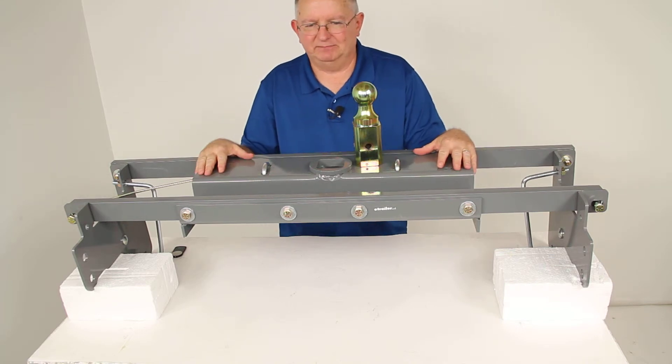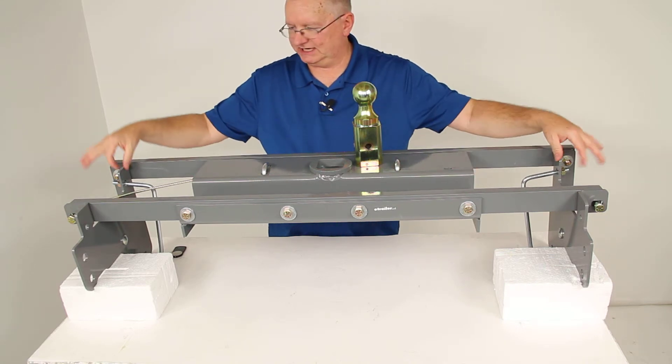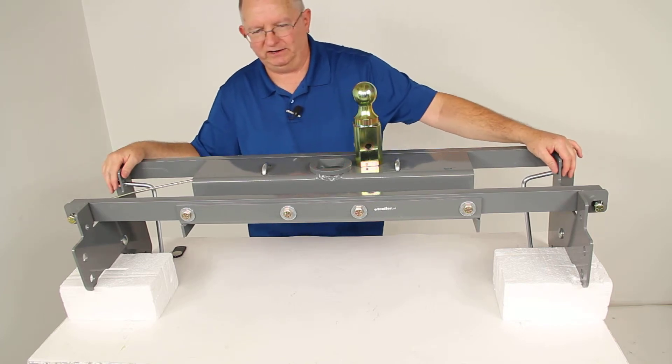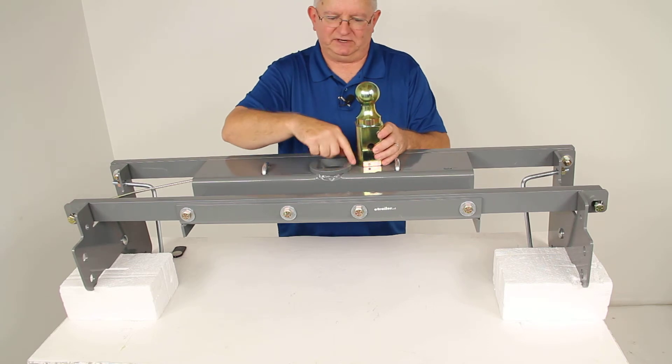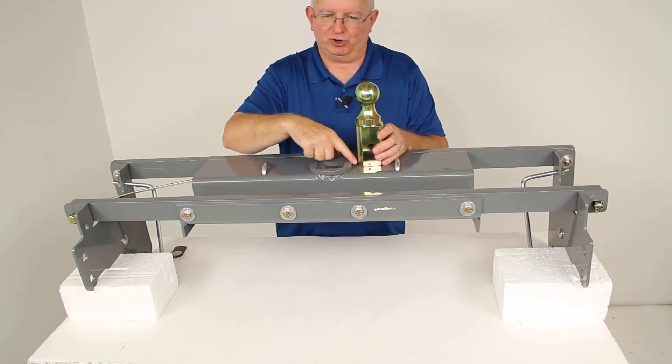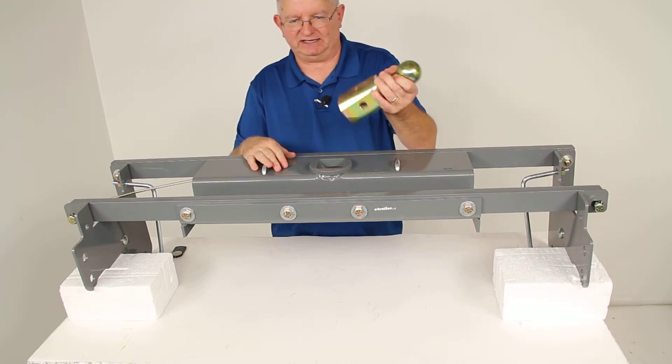This is a very simple installation. It includes this custom mounting kit. There is no welding required. The truck bed does not have to be removed to be installed. You do have to cut a four-inch diameter hole into the bed to allow this to protrude through, so you can have access to the ball.